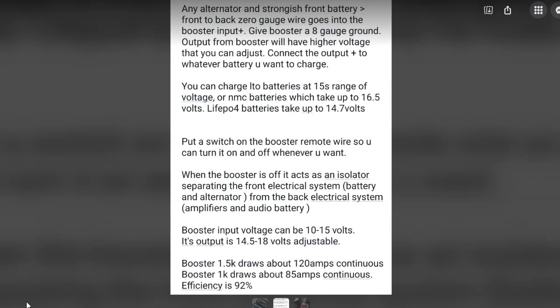You can input 12 volts or 11 volts or whatever and it's adjustable where you can set how much voltage you want to charge. You can say I want to charge 15 volts or whatever. Let me read this: Any alternator and strongish front battery, front to back zero gauge wire goes into the booster input plus. Give booster an 8 gauge ground. Output from booster will have higher voltage that you can adjust. Connect the output positive to whatever battery you want to charge. You can charge LTO batteries at 15S range of voltage, or NMC batteries which take up to 16.5 volts, LiFePO4 batteries take up to 14.7 volts. Put a switch on the booster remote wire so you can turn it on and off whenever you want.